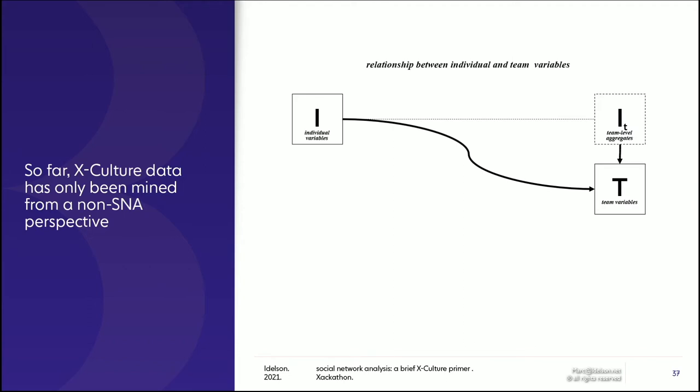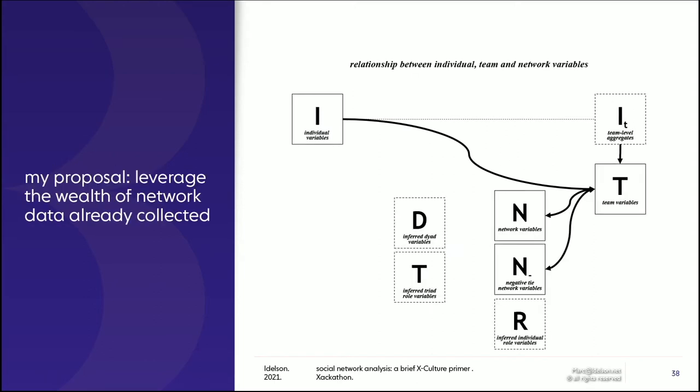So now let's move on to how social network analysis can bring more modeling of the phenomena we are observing in X-Culture exercises. So far, X-Culture data has mostly been mined by taking individual variables, producing team level aggregates like gender distribution or time zone diversity, and looking at team variables such as quality of the report produced, overall creativity, and so on and so forth. What social network analysis brings are new types of network variables that can explain phenomena not yet explained by the traditional approach to experimenting with X-Culture exercise and data.